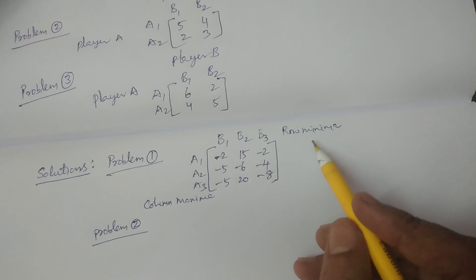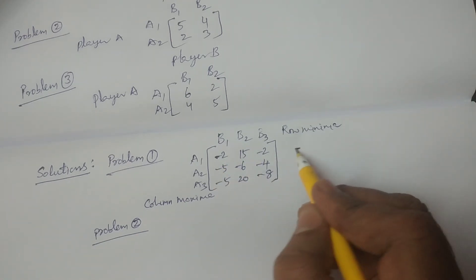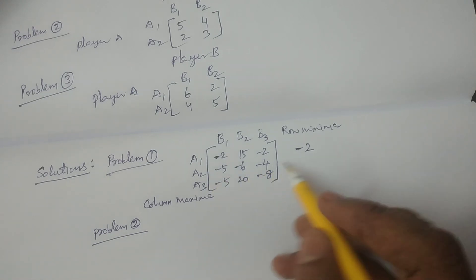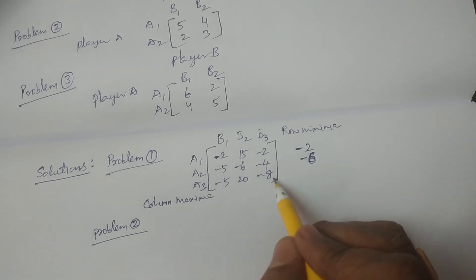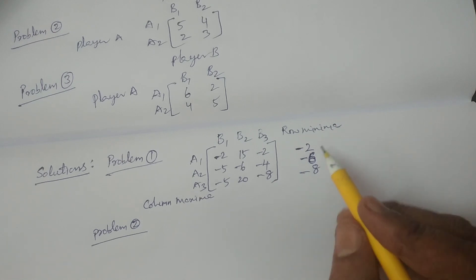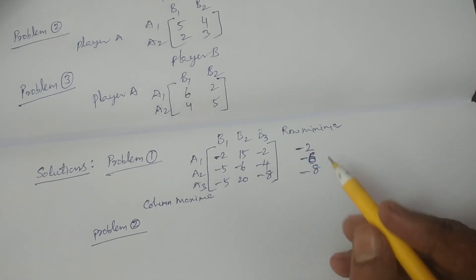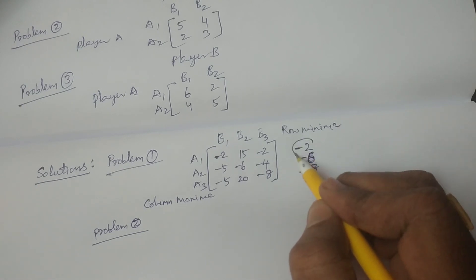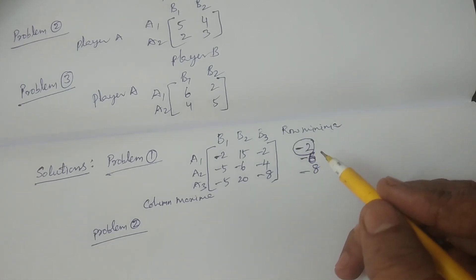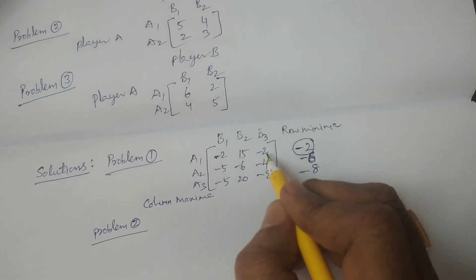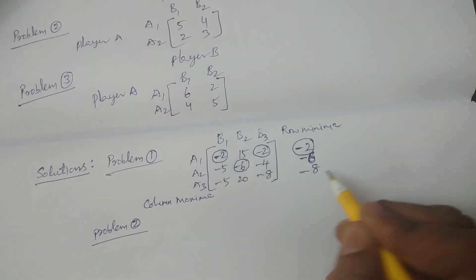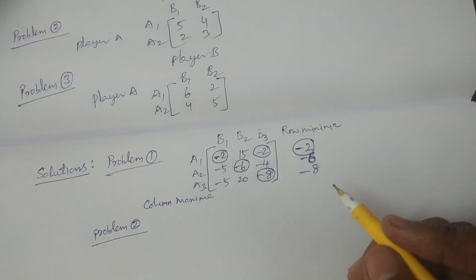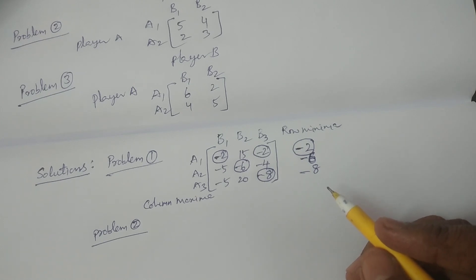First you calculate row minima. The minimum of the first row is minus 2; the second row minimum is minus 6; and minimum for the third row is minus 8. Among these minima you have to calculate the maximum, which is minus 2. Whichever is minimum, you make a circle — minus 2 exists at two particular places.